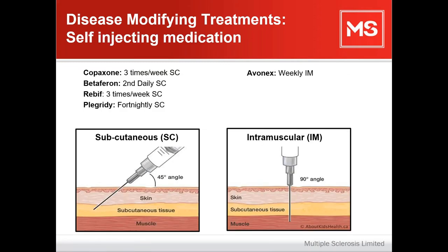With injectable treatments, we categorise them as subcutaneous or intramuscular, which tells us where the drug is administered. This is important because drugs are developed to be administered in a specific area — either subcutaneous fat or muscle. Injecting a drug into the wrong spot means it potentially won't be absorbed as well and therefore won't work as well.